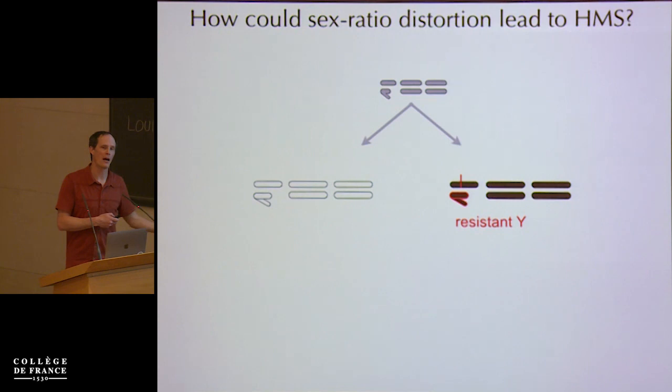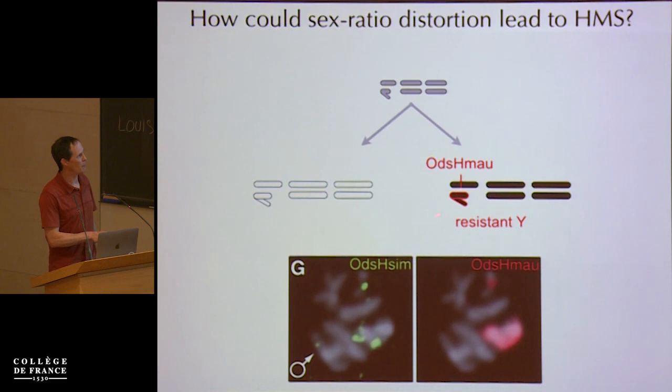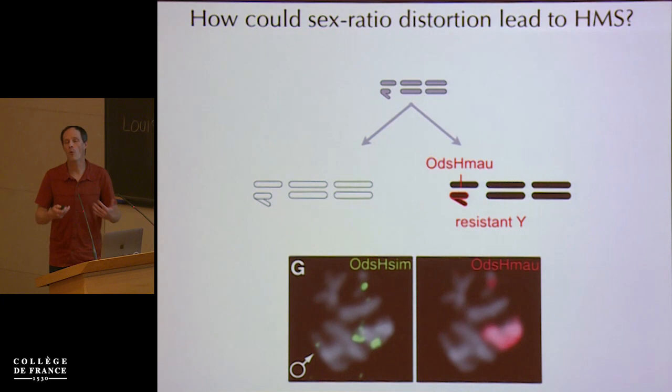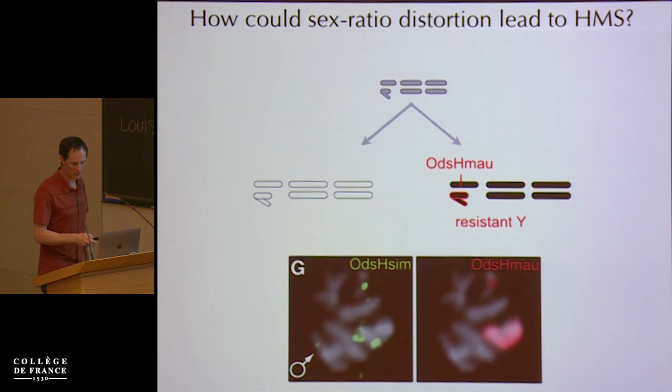What evidence do we have that this underlies any of the hybrid male sterility? I can't tell you for sure that Odysseus was a driver, but it sure sounds like it. The *mauritiana* allele of Odysseus binds to the simulans Y but not its own, which is consistent with a model where at one point it was a driver targeting the *mauritiana* Y chromosome. As a result, the *mauritiana* Y chromosome lost those sequences, so Odysseus no longer binds to its own Y.